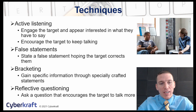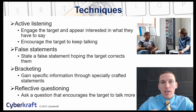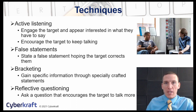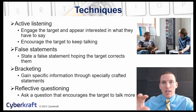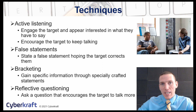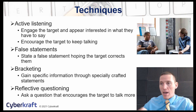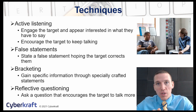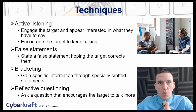Bracketing is a way to gain specific information using statements that are specifically crafted for that topic. You're thinking about these statements in advance and carefully crafting them to get information. For example, if you want to get classified information about a specific cryptographic system, you might state what the advantages or disadvantages are of certain cryptographic systems and have the person correct you or explain things.